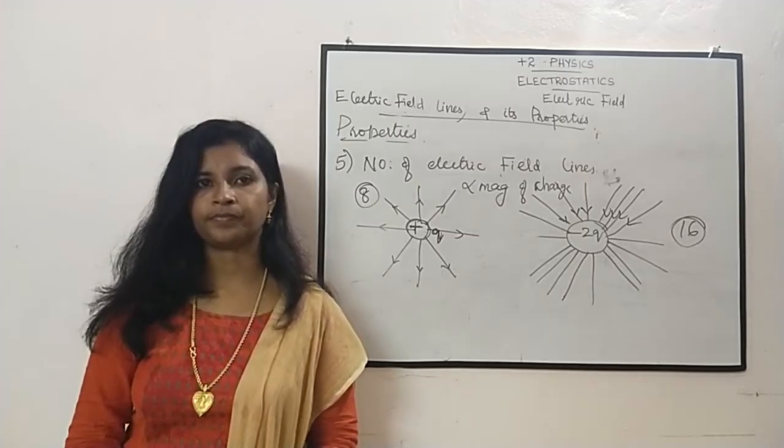These are all the properties of the electric field lines. The first property: they start from the positive charge and end at the negative charge. The second property: the direction is defined by drawing a tangent to the field line. The third: as the distance increases, the strength of the electric field decreases. The fourth: electric field lines never intersect each other. The fifth: the number of electric field lines depends upon the magnitude of the charge. Thank you for watching.